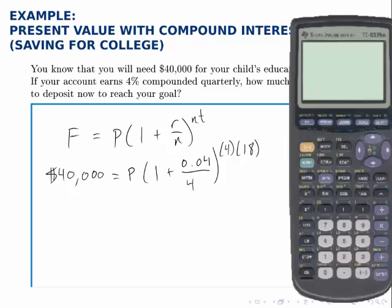Now, to solve for P, what I'm going to do is simplify everything on the right side, and then divide both sides by that amount to solve for P.